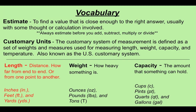Customary units: the customary system of measurement is defined as a set of weights and measures used for measuring length, weight, capacity, and temperature. It's also known as the US customary system. Today's customary unit we're going to go over is length, which is distance — how far from end to end, or one point to another.